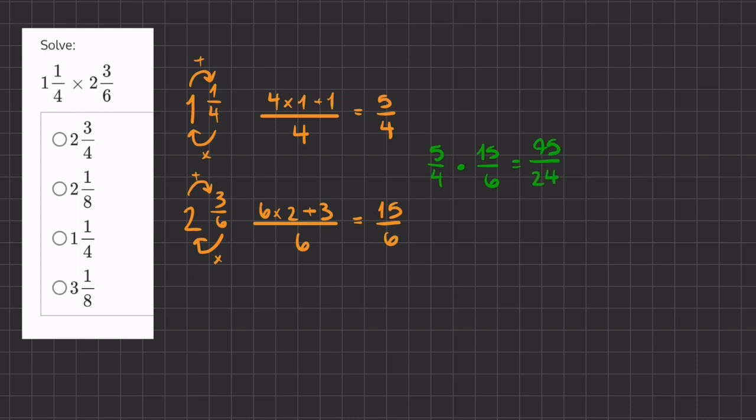And now we have to turn this improper fraction into a mixed number. We'll ask ourselves, how many times does 24 go into 75? The answer is 3. So 3 is going to be our whole number.